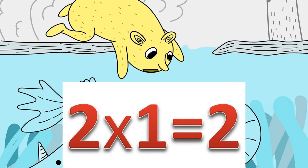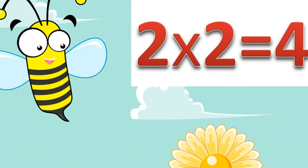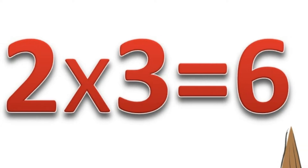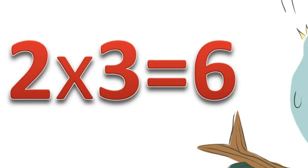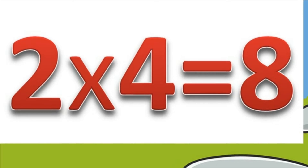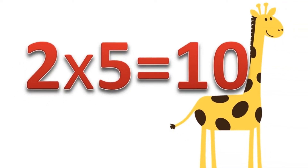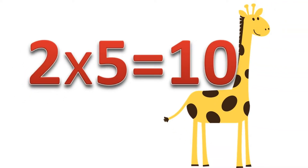Two times one: two. Two times two: four. Two times three: six. Two times four: eight. Two times five: ten.